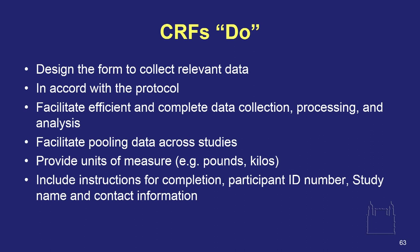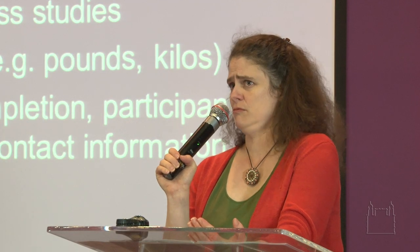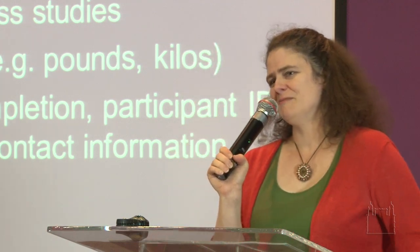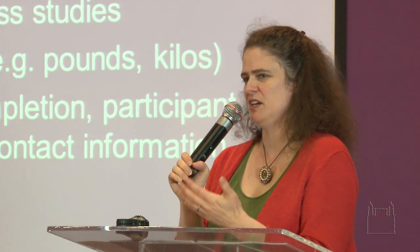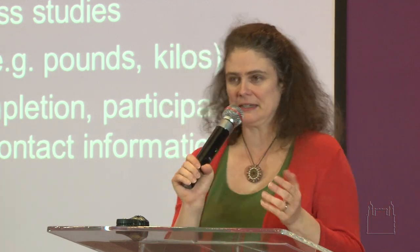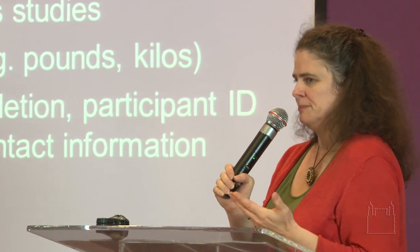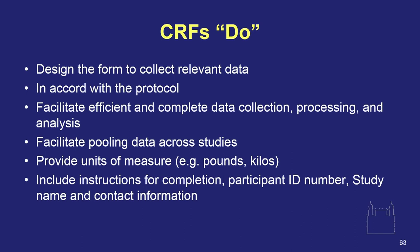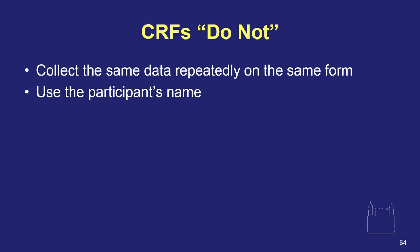When I show up and look at something and I say, 'That 60-year-old man weighs 69 pounds?' — probably they should have put kilos instead. These are the things we have to think about. So provide your units, include very clear instructions on completion. You want to have the participant identification number, the study name, and any contact information on each form. You do not want the human being's name on the form — their name, no; their ID number, yes. Do not collect the same data repeatedly, especially on the same form. Anything that can be calculated — give me their weight, give me their height, the computer can calculate the BMI.